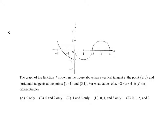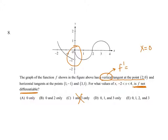For our next problem, we're looking for places where F is not differentiable. A big glaring point is where the function is not continuous, so x equals 0 must be one of those places — eliminating answer choice C. We're also told there's a vertical tangent at the point (2, 0). A vertical tangent means the slope is undefined, so that's the other point of non-differentiability. That gives us answer choice B.